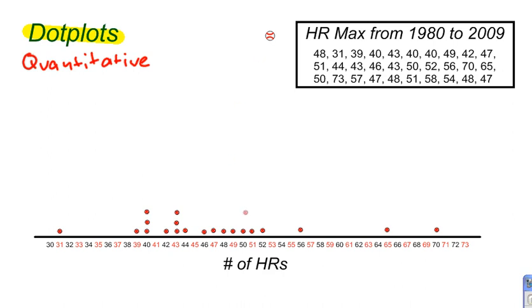50 and 73. Again, notice that the dots are lined up. 50, 73 — good old Barry Bonds. 57, and then 47. 47, 48, 51, 58, 54, and then two more after that. 58, 54, 48 — line that up. And 47, one last time.